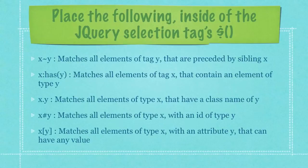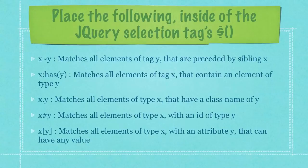By siblings, what I mean is: let's say you have a div element, and inside of that div element you have an h1 header element and a paragraph element. They both lie in the same div, hence they are siblings. The second bulleted item will match all elements of tag X that contain an element of type Y.